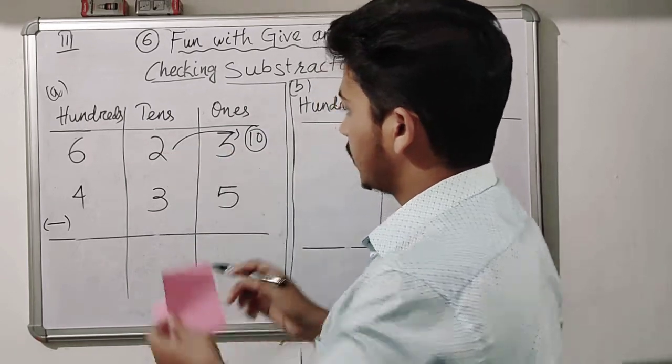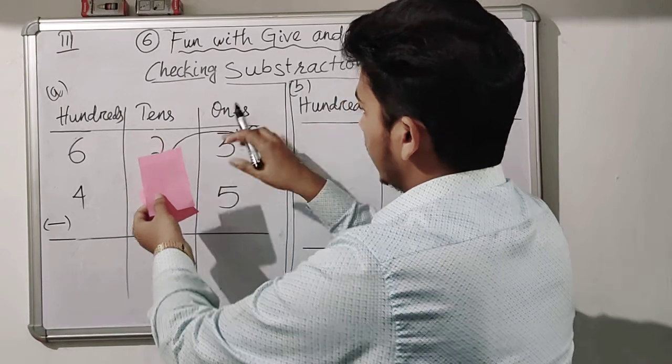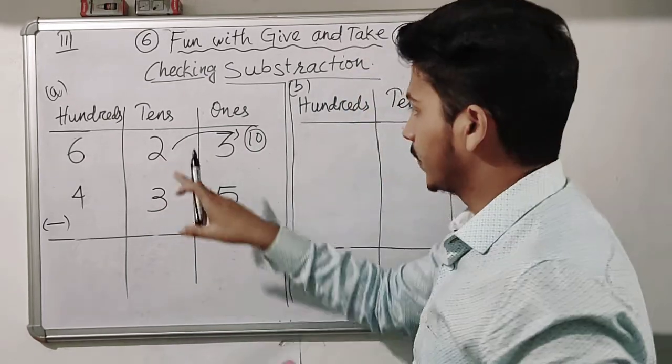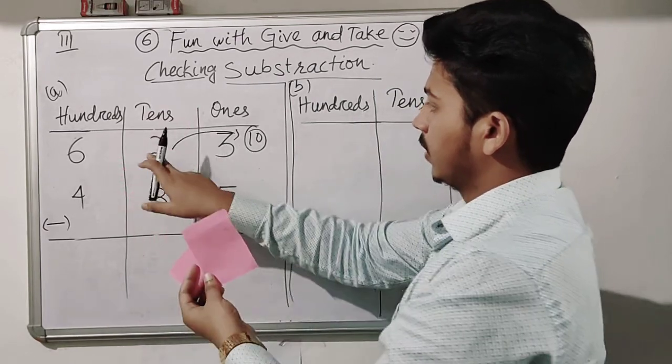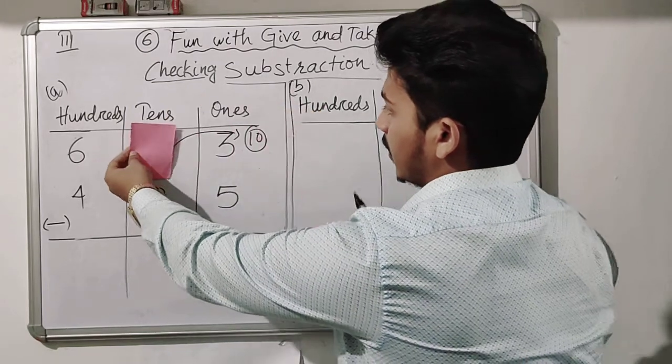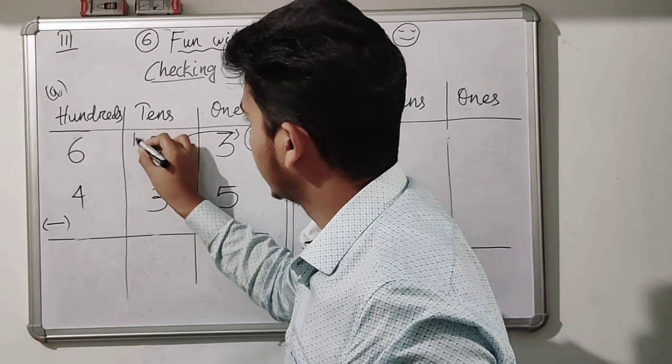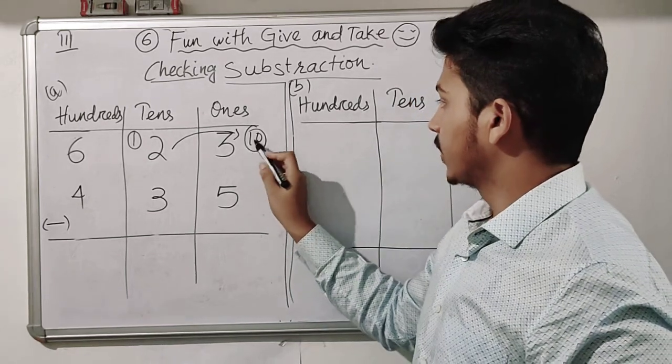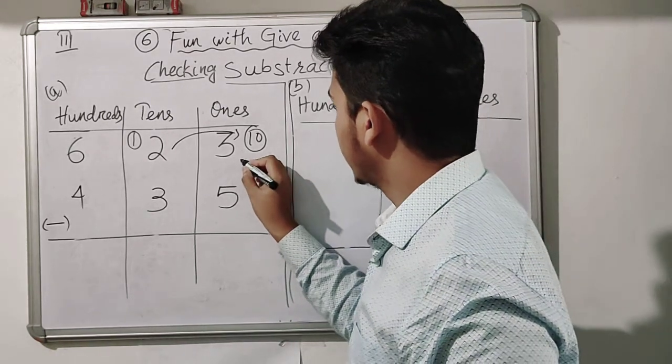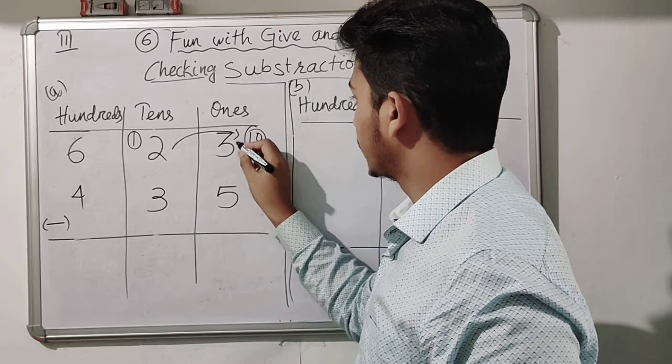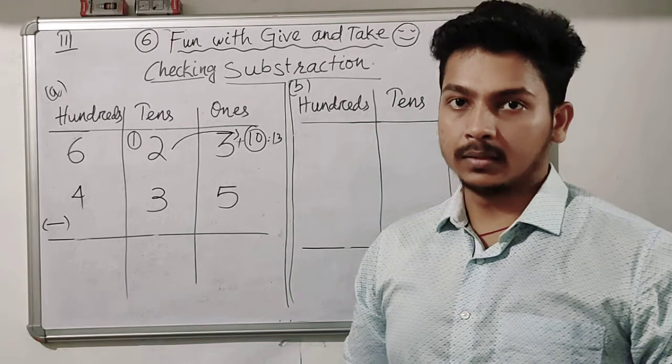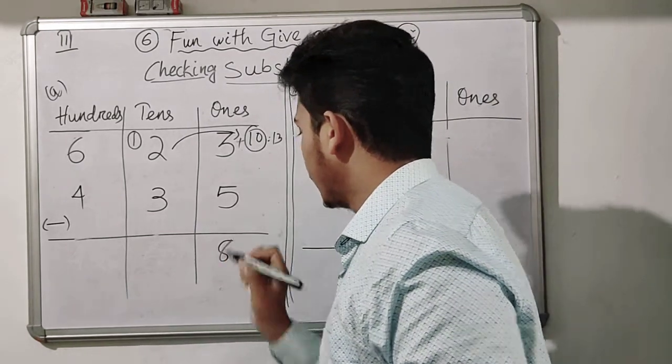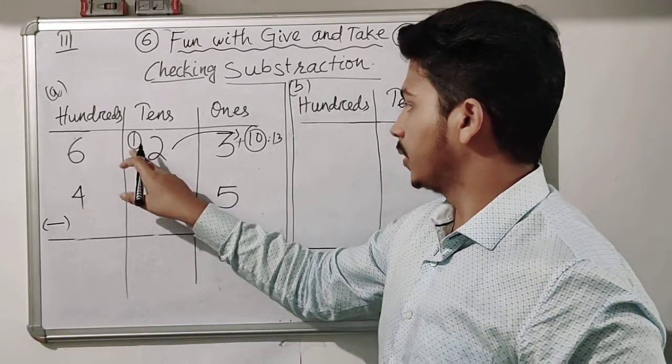After this, one tens plus the ones, so ten plus three will be thirteen. The new number will be thirteen. Now thirteen minus five equals eight.